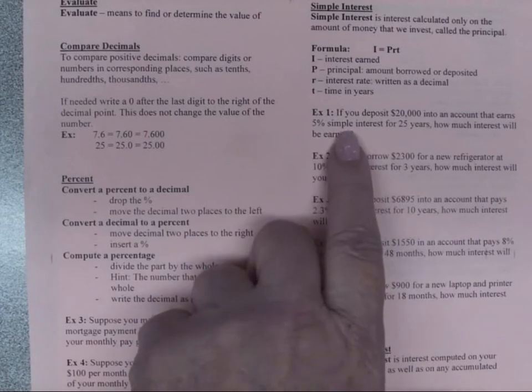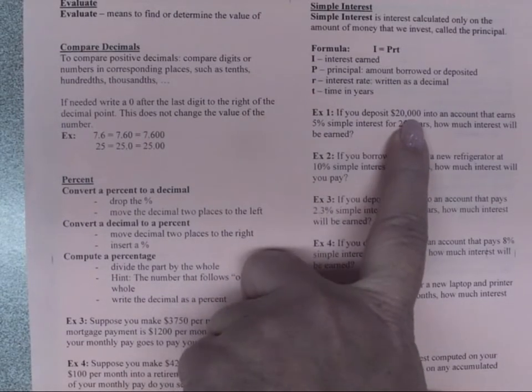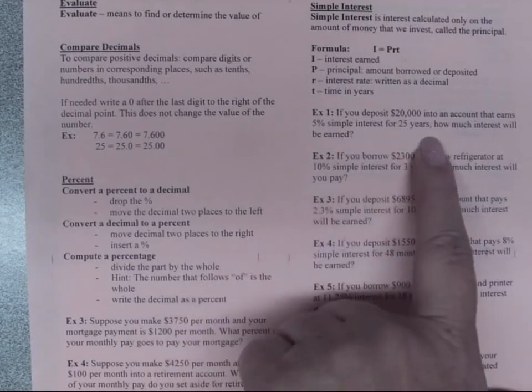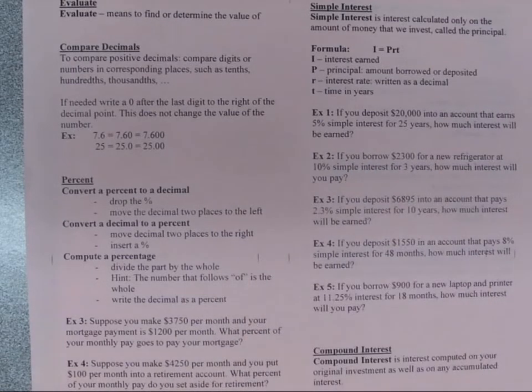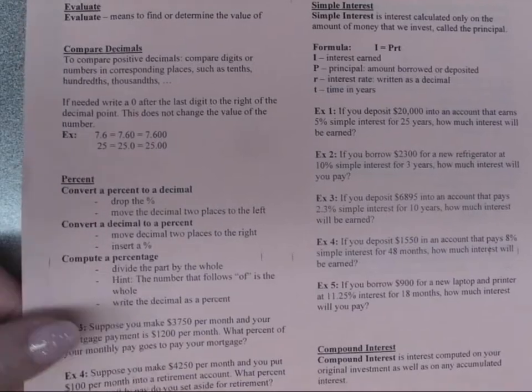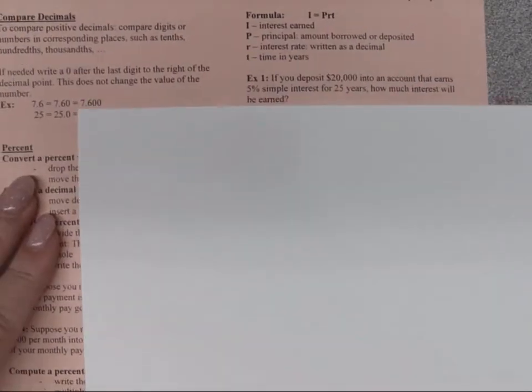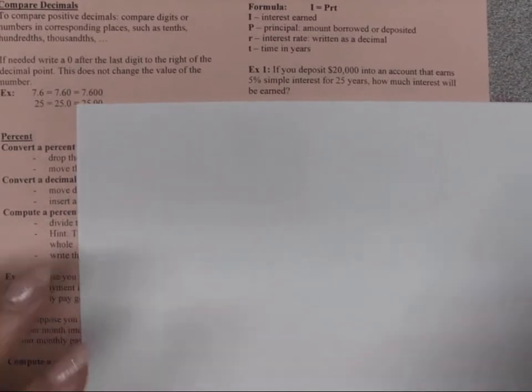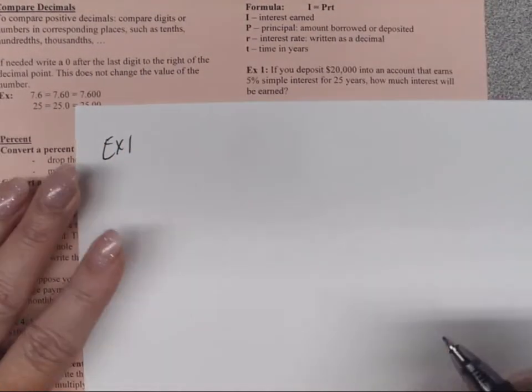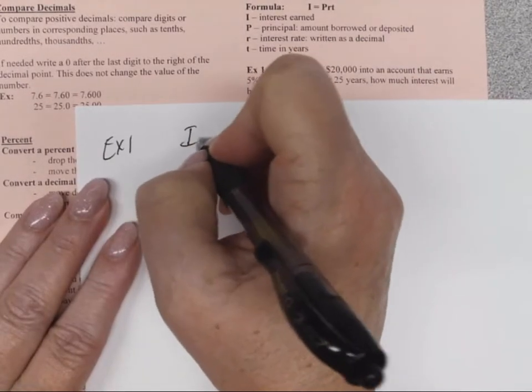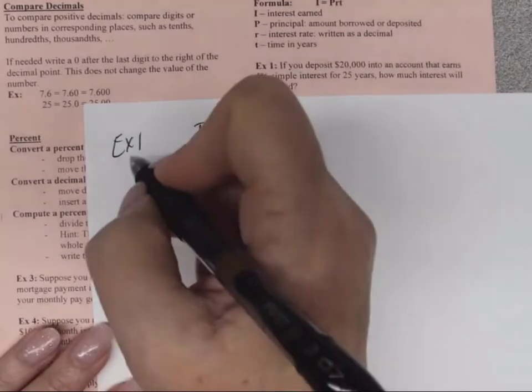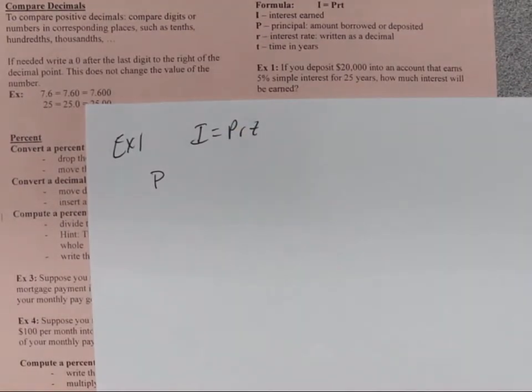So for example 1, you deposit $20,000 into an account that earns 5% simple interest for 25 years. How much interest will be earned? Alright, so put that there so we can see it while we work on it. So for example 1, remember we are looking at I is equal to PRT. I find it helpful for my students if we write what we're looking for. We're looking for the simple interest. We want to know how much interest is earned.